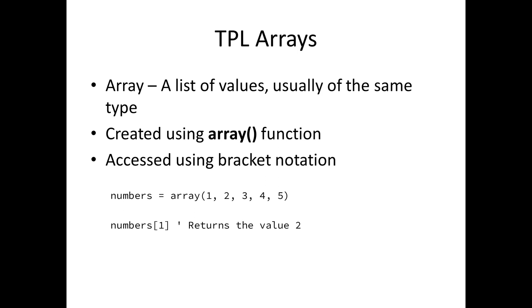The other data type is arrays. Arrays are a list of values — the list is usually all the same type, like all integers or all strings. Like objects in TPL, they are created using a function called array, and you access the values using bracket notation. The value in the bracket is the index. Array indices start at zero, so the first value is zero, the second is one, and so on. Here I've created an array called numbers with the values one through five. If I wanted the second number, I would use index one, which returns the value two.